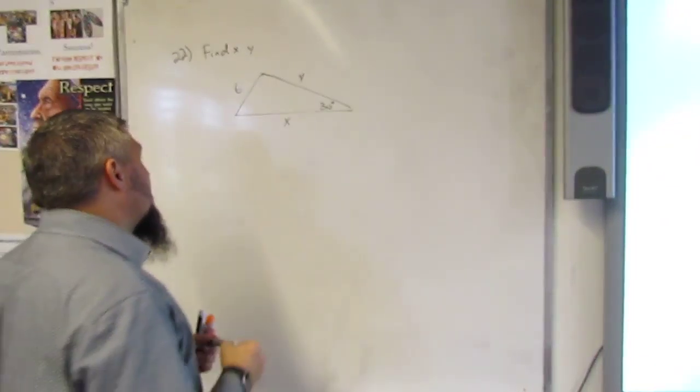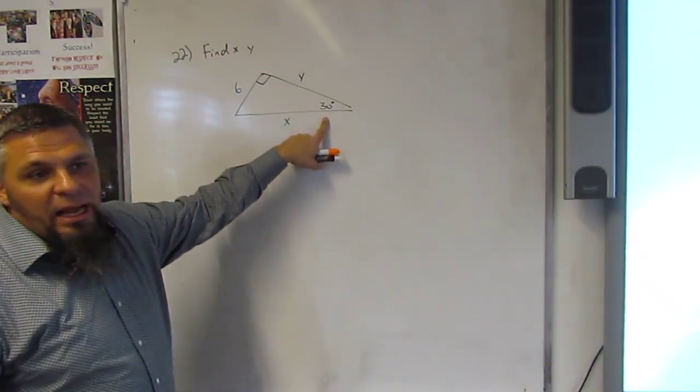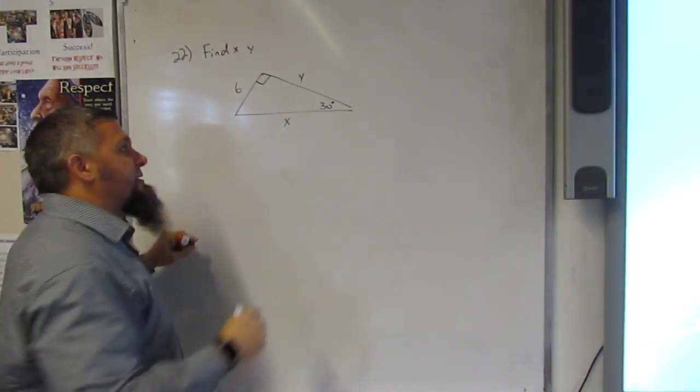We know that this is the right angle. We know that this is 30. How much is this? 30. 60. 60.